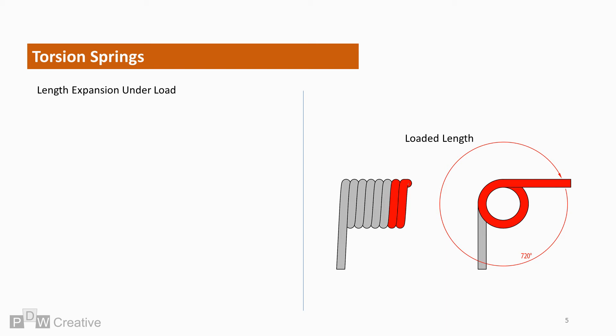The image here shows why. The spring arm has rotated 720 degrees. This is two full rotations, adding two coils under load.